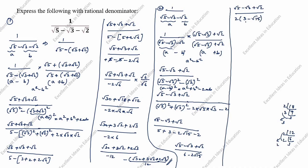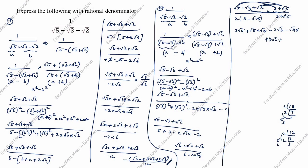You see the denominator is 3 minus root 15. Root 15 is irrational, so we rationalize again, multiplying by (3 plus root 15) divided by (3 plus root 15). We multiply this out: root 5 times 3 is 3 root 5, root 5 times root 15 is root 75, minus root 3 times 3 is minus 3 root 3, minus root 3 times root 15 is minus root 45, plus root 2 times 3 is 3 root 2, plus root 2 times root 15 is root 30.